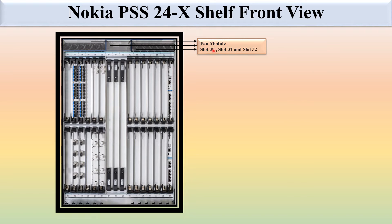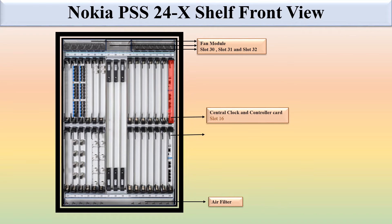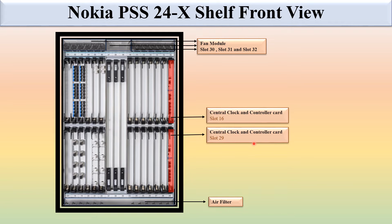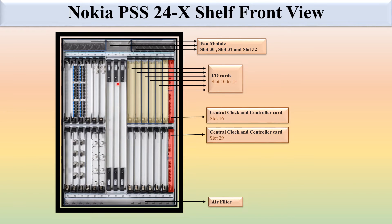You can see the fan module slots: slot 30, slot 31, and slot 32. These three slots are fixed for the fan modules, which are used for cooling purposes. Below, at the bottom, there is a filter. Slot 16 and slot 29 are fixed for the central clock and controller card — the last card on top and the last card on the bottom.